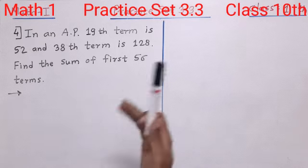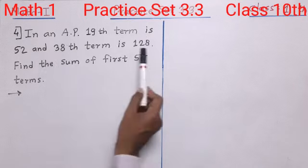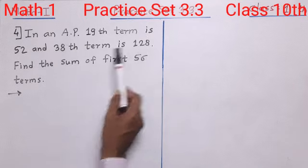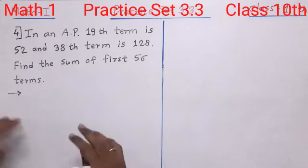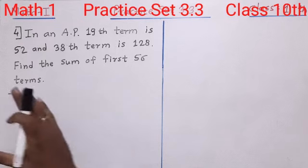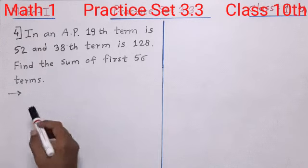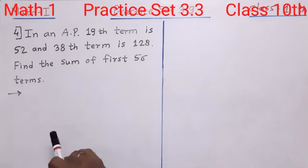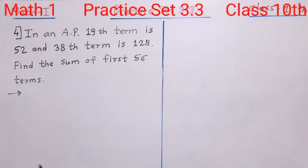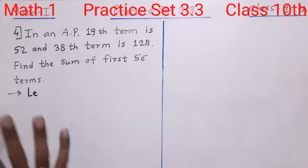There is an arithmetic progression whose 19th and 38th terms are given. We can see those two terms and we have to find out the sum of the first 56 terms. We don't know which AP is here and we do not know all the terms. Even then, we have to find the sum. So first, let us write what we have been given.